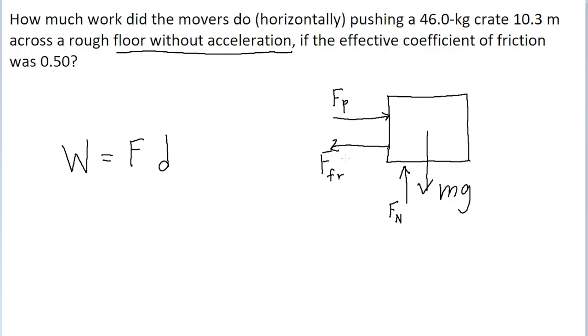If the box is moving horizontally without acceleration, then the horizontal forces must be balanced. In other words, since the two forces we have in the horizontal direction are in opposite directions, then they must have equal magnitudes to one another.